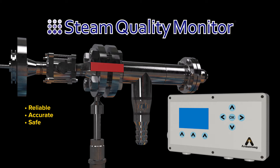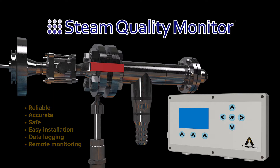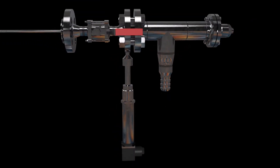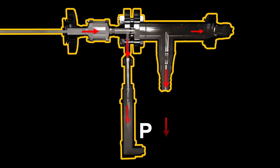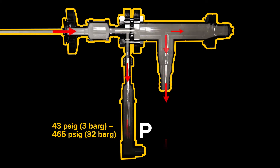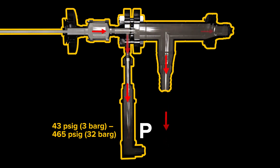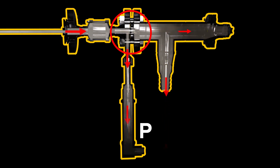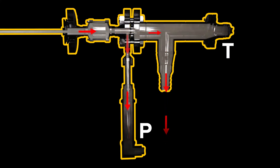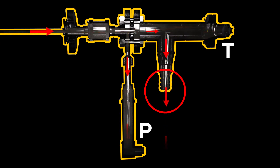The Steam QM1 is reliable, accurate, safe, easy to install, and it provides you with data logging and remote monitoring capabilities. The Steam QM1 monitors and measures dryness fraction and alerts you of steam quality problems. Steam enters the QM1 at any monitoring point on the steam network. The first check is at pressure sensor P. Incoming steam is between 43 and 465 pounds per square inch gauge, or 3 bar to 32 bar gauge. Steam enters through a calibrated orifice, and this restriction reduces the pressure to atmospheric pressure. The temperature sensor T then monitors temperature, and finally the steam sample is discharged to an atmospheric drain.